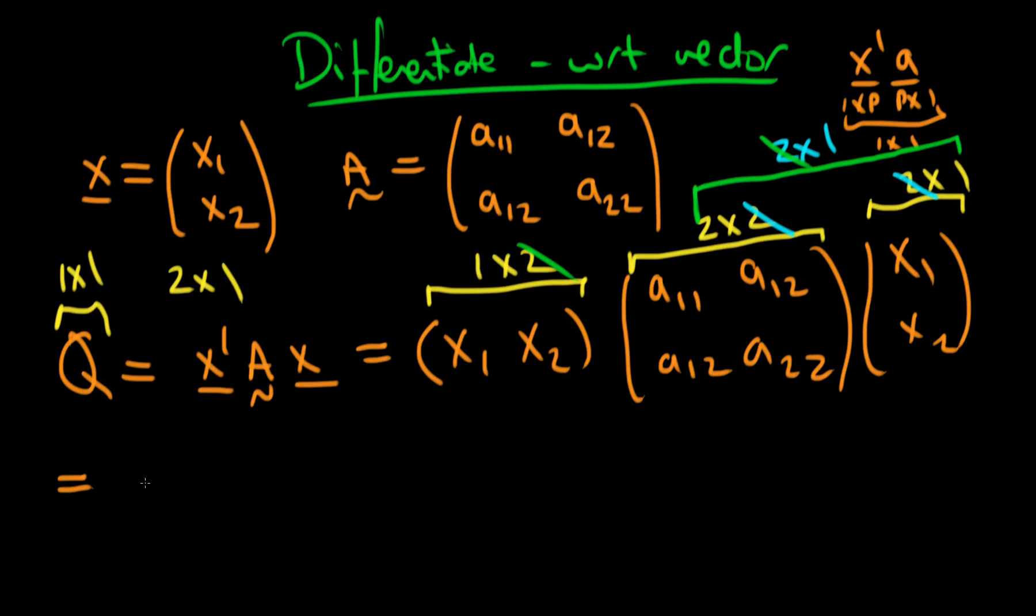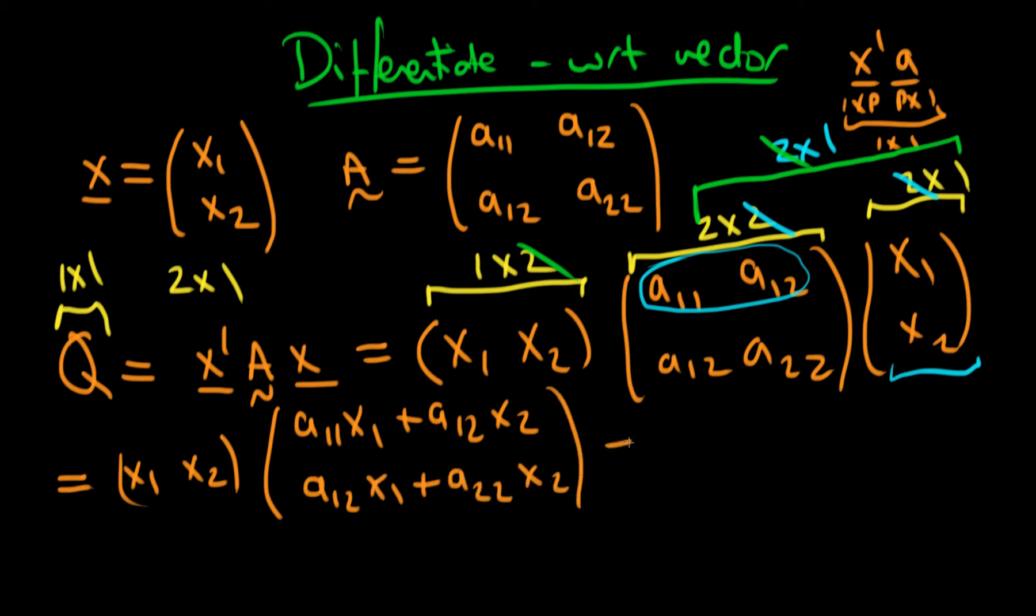If we multiply out these latter two products here, leaving the first row vector, we can write this as it's going to be a11 times x1 plus a12 times x2. That's going to be the top component. So to get that, I've just taken this row here and multiplied it by this column vector here. And then the second entry in our 2 by 1 vector is going to be the bottom row, so it's going to be a12 x1 plus a22 times x2. The final result is Q equals a11 x1 squared plus 2 a12 x1 x2 plus a22 times x2 squared.